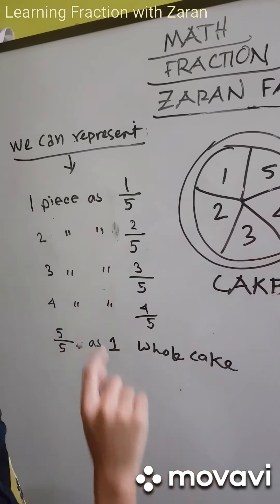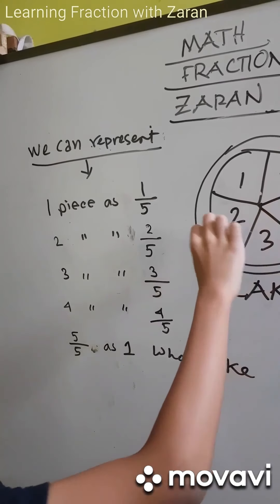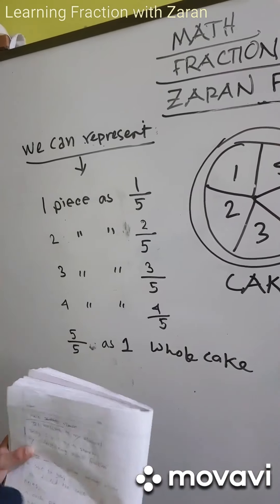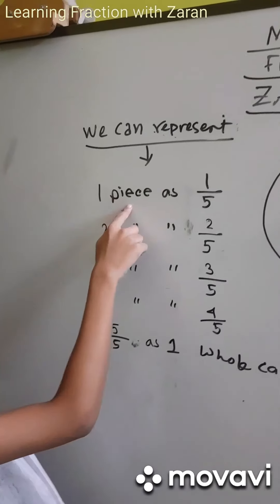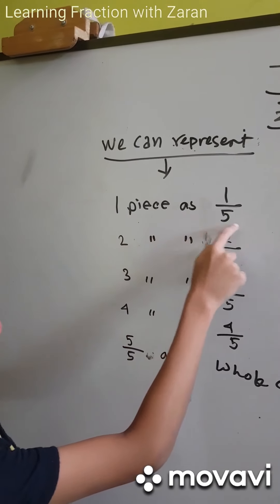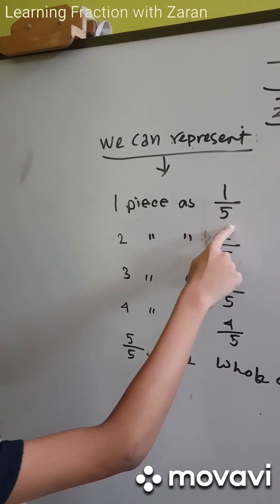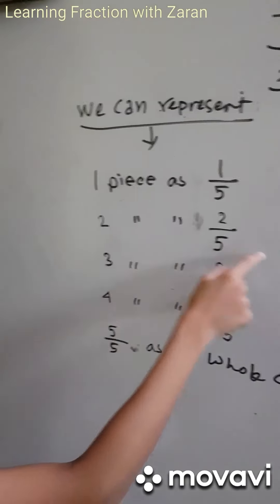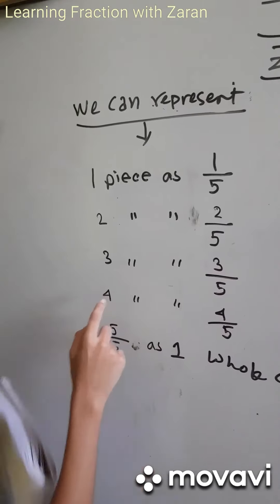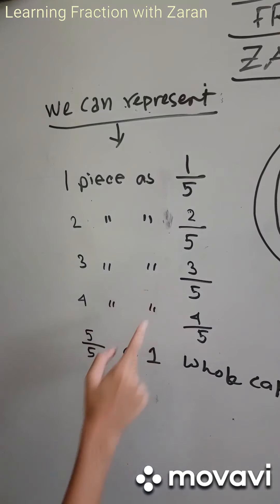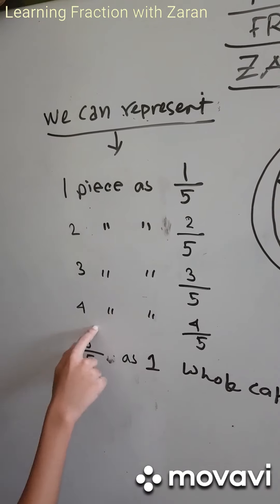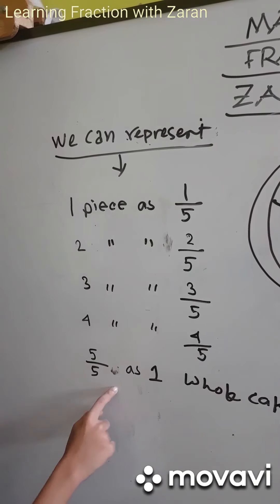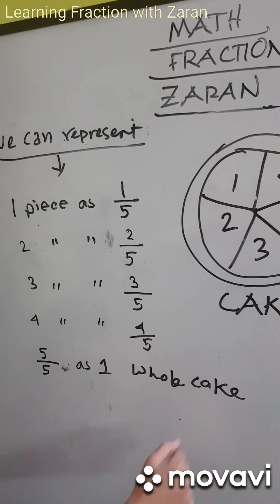So all 5 pieces are a fraction of this one total cake. We can represent one piece as 1 by 5, two pieces as 2 by 5, three pieces as 3 by 5, four pieces as 4 by 5, and 5 by 5 as 1 whole cake.